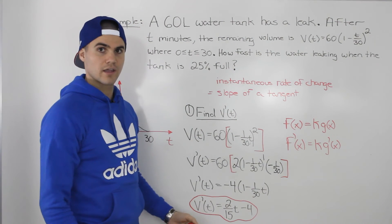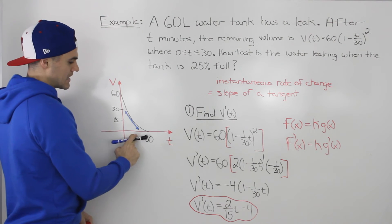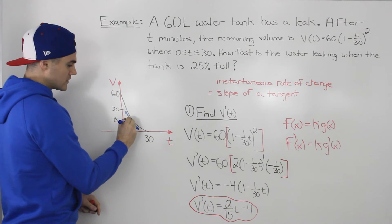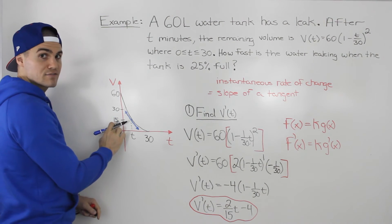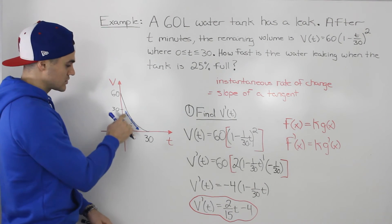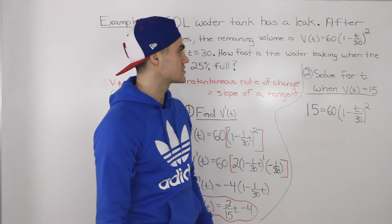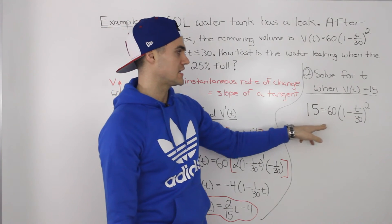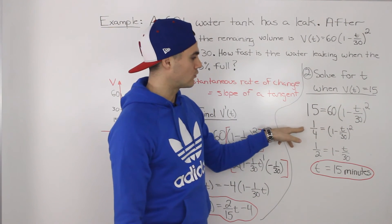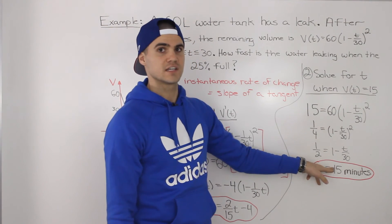This derivative is in terms of t, but the question gives us a volume condition (15 liters), not a time. So we need to solve for t when V(t) = 15. Setting 60[1 - t/30]² = 15, we divide both sides by 60 to get 1/4, then square root both sides to get 1/2, and solving for t gives t = 15 minutes.